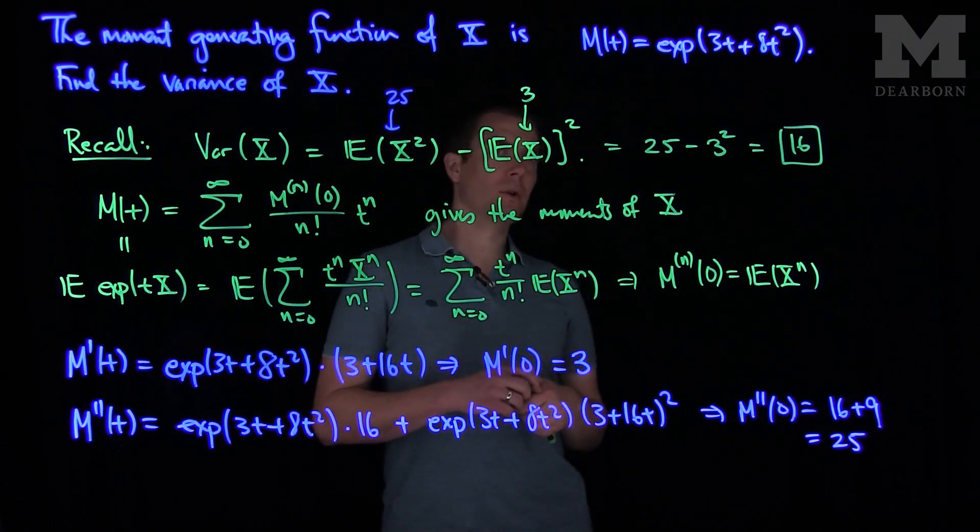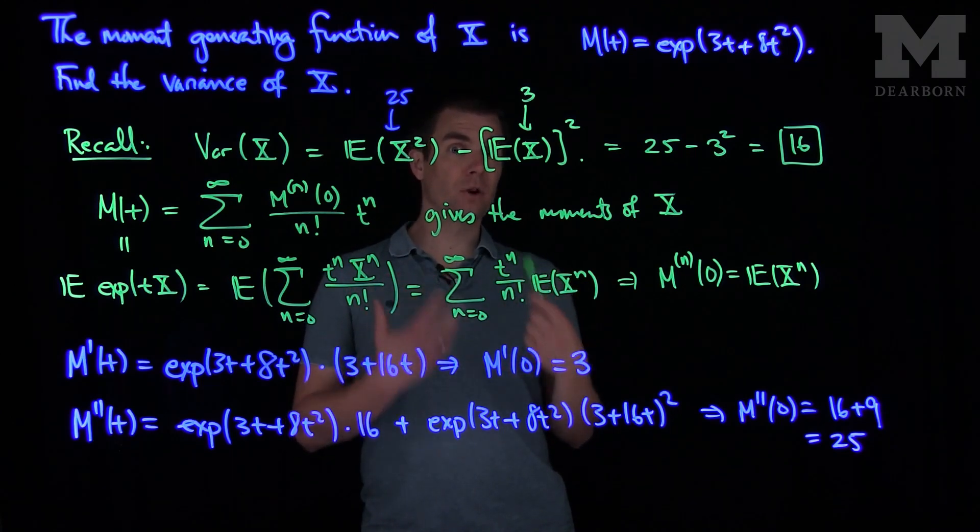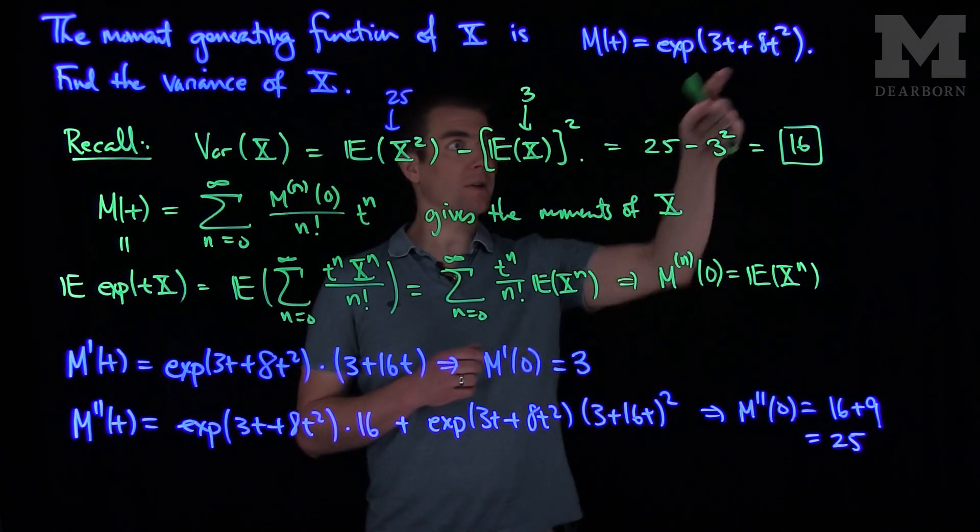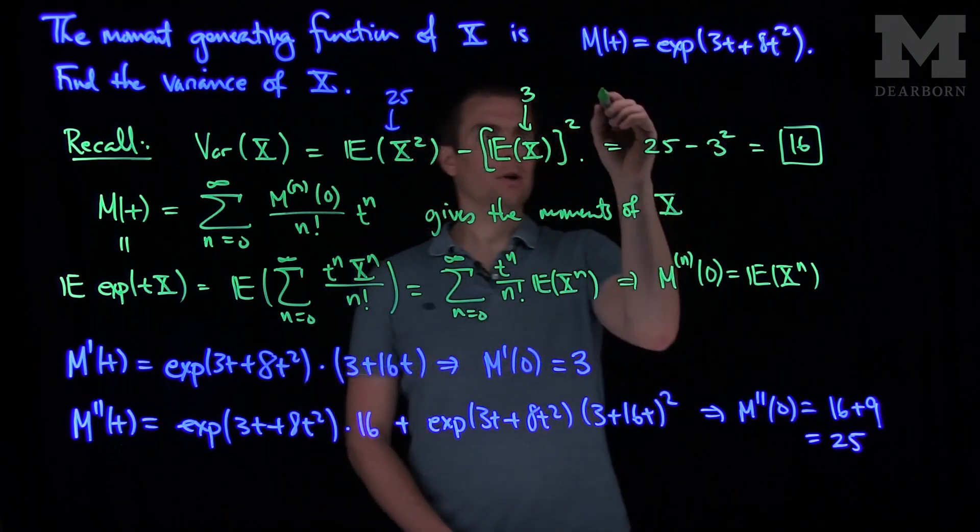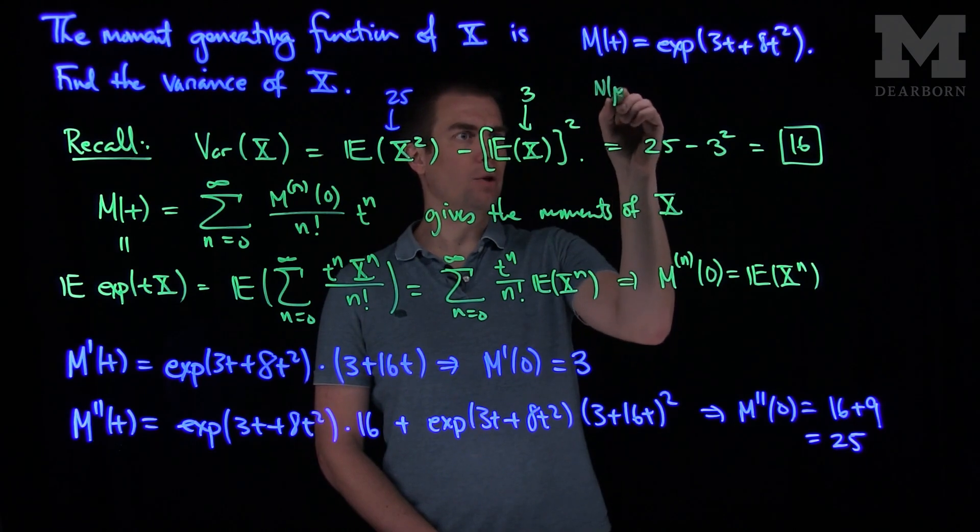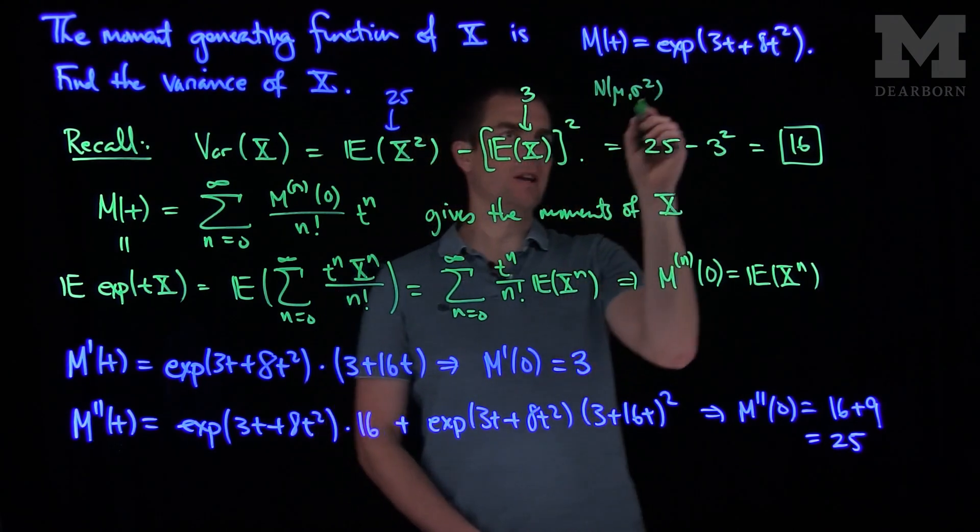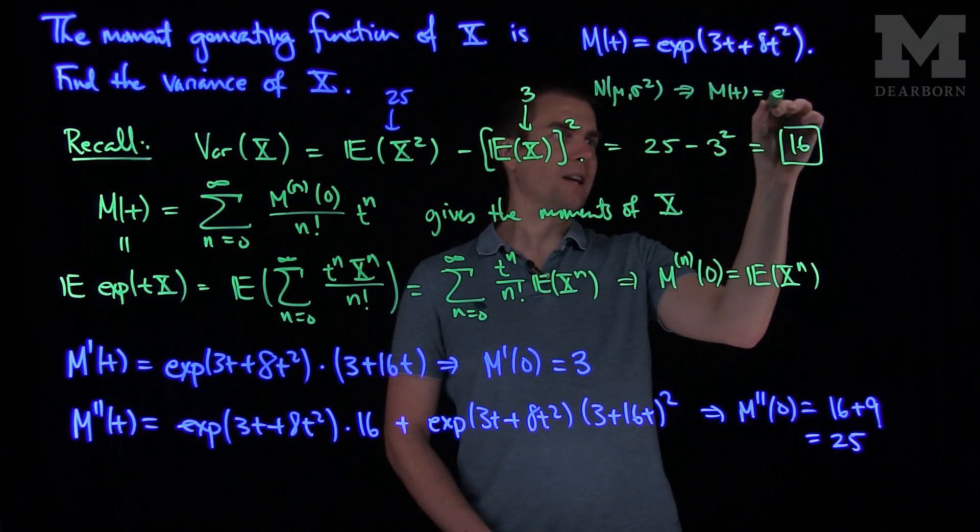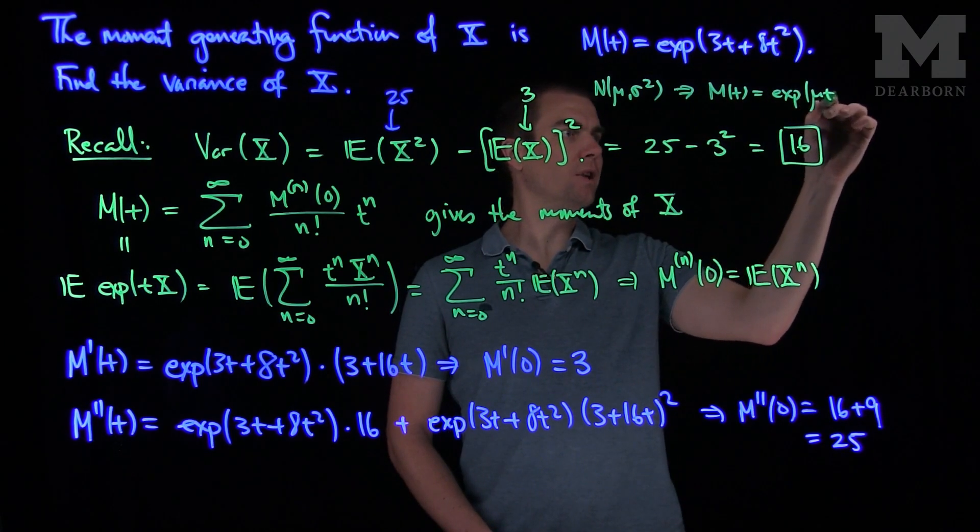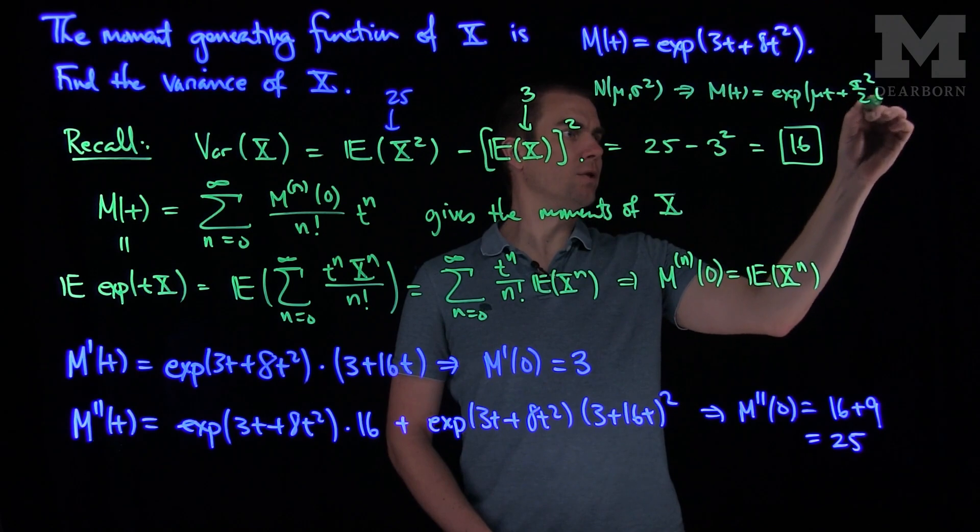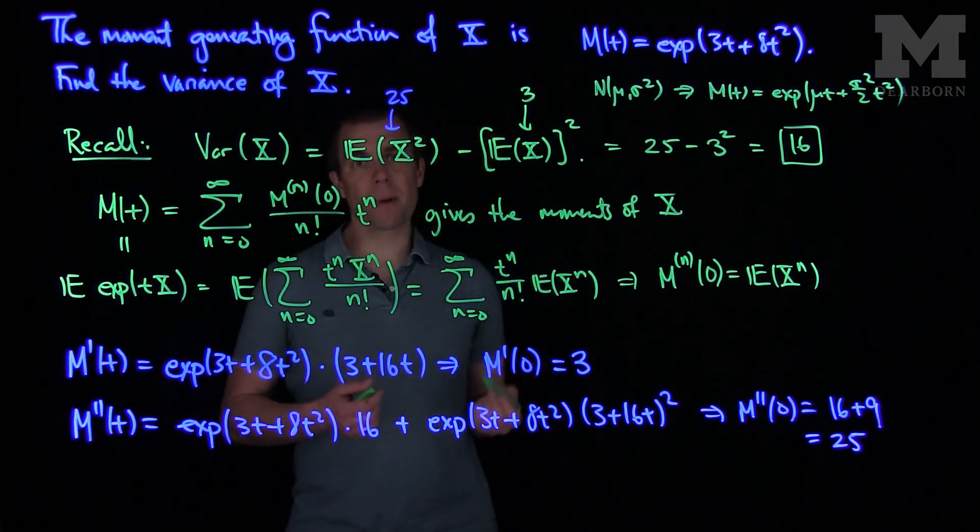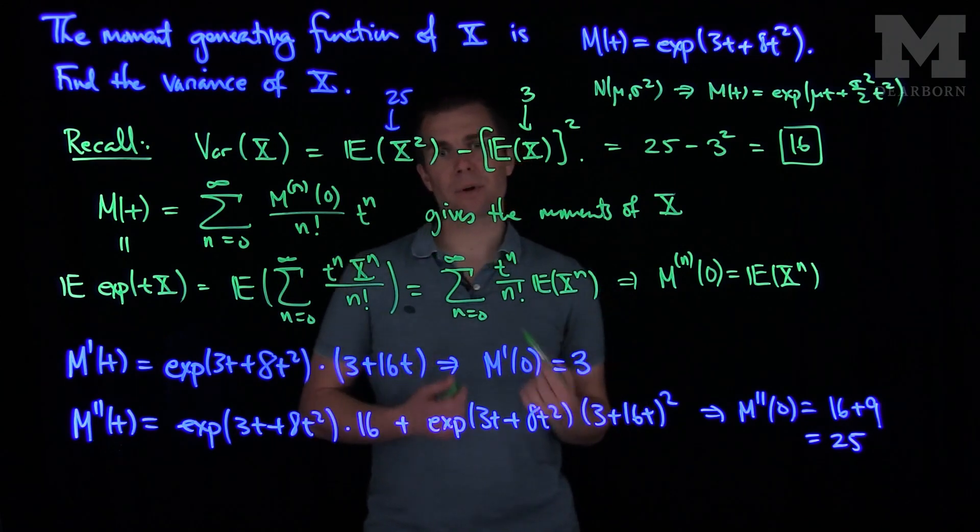We can also notice that this happens to be the moment-generating function for a normal random variable whose mean is 3 and whose standard deviation is the square root of 8. Because for a normal N(μ, σ²) random variable, the MGF M(t) will be the exponential of μt plus σ² over 2t squared. And so that is a useful formula to remember since moments of normal random variables appear in a lot of different problems.